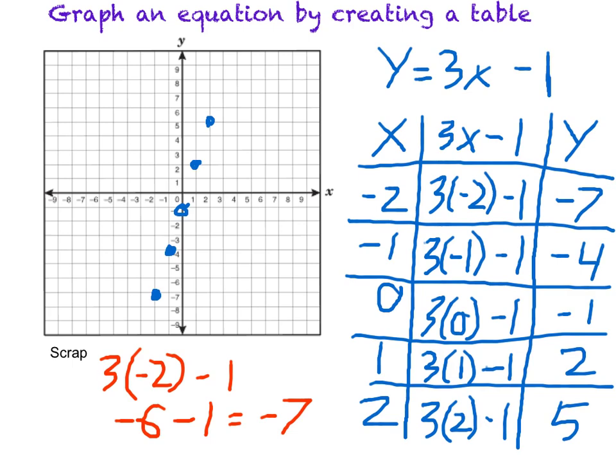So because it's a linear equation, we can actually connect the dots and make this into a line, which is going to indicate that anything on the line, on this line here, is going to be a solution.